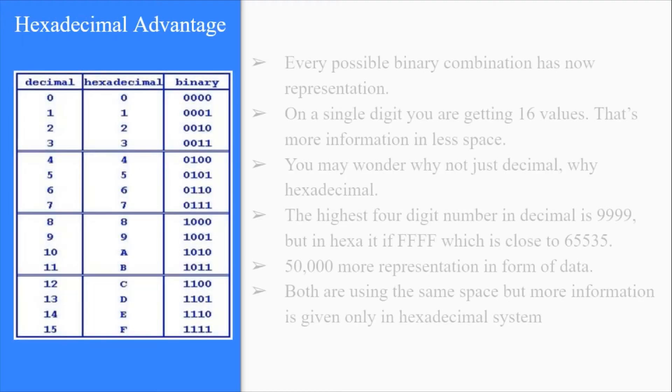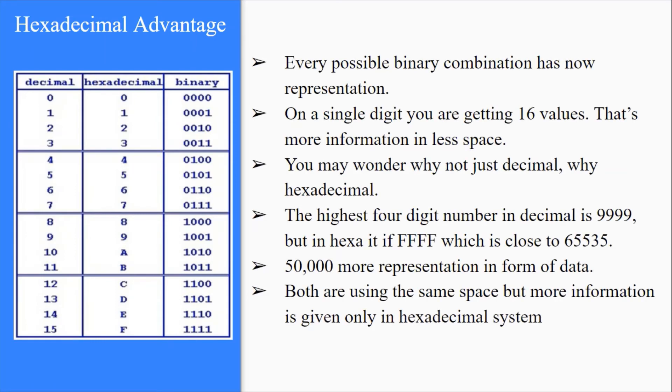Now every possible binary combination has a representation. On a single digit you are getting 16 values. That is more information in less space.